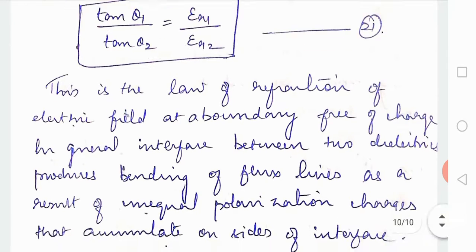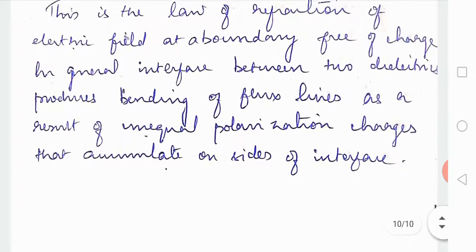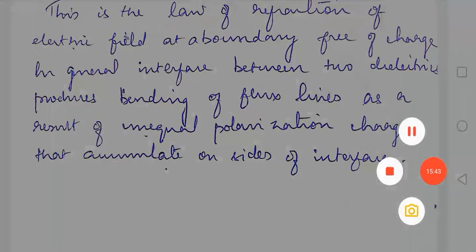In general, interface between two dielectrics produces bending of flux lines as a result of unequal polarization charges that accumulate on the sides of the interface. This is all about boundary conditions.